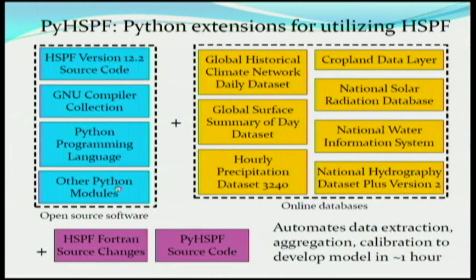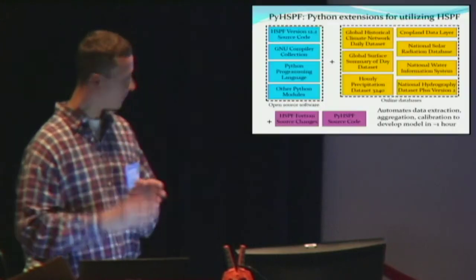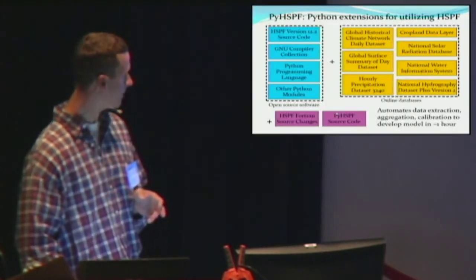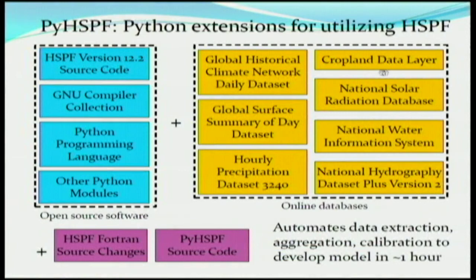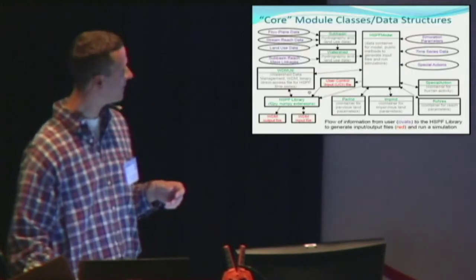You need Python and some other modules: GDAL for image processing, PyShape for vector shapefile data, Matplotlib for plots, and NumPy for arrays. The databases include three climate-based sources, the cropland data layer which is a 30-meter grid released annually nationwide since 2008, the National Water Information System, and NHDPlus which has the connection between all river segments in the U.S. PyHSPF uses Python tools to automatically get this information, bring it into the form HSPF understands, run it, and develop a model.